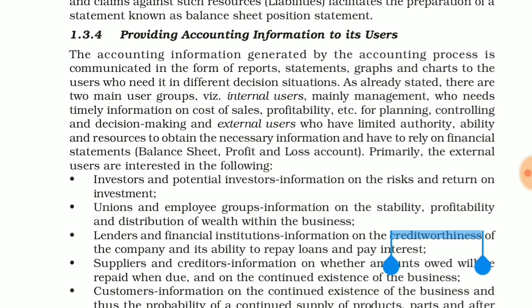After external users, there are limited authority users who also want knowledge so that they can know the company is going to profit. When someone puts money in the company, they want to earn a profit, so they need to track it. They can track it when you put profit and loss accounts in front of them.